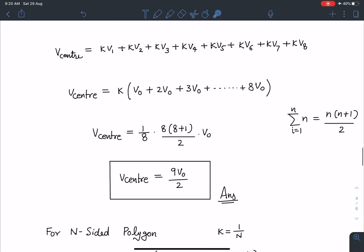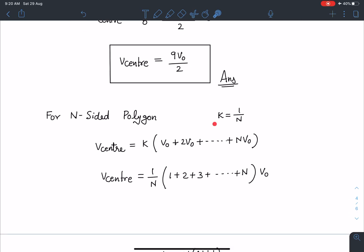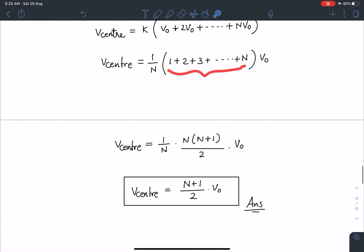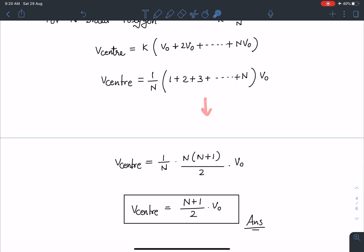Now I am going to extend this result for N-sided polygon. In case of N-sided polygon that number will become 1 by N. So 1 by N times V0 plus 2V0 plus 3V0 up to NV0 for the last vertex. I am going to take this 1 by N and V0 also common, then this is going to be 1 plus 2 plus 3 up to N. 1 by N is as it is and that sum in the bracket is N(N+1) by 2 times V0. If I simplify this I am going to get V center as (N+1) by 2 times V0. So this is the answer for second part.